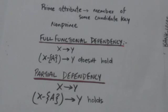A functional dependency from X to Y is a partial dependency if some attribute A from X can be removed and the dependency still holds.